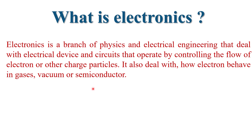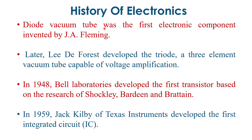Electronics has different branches including digital electronics, analog electronics, microelectronics, nanoelectronics, optoelectronics, and IC or semiconductor devices. These are the different branches of electronics. Now let's look at the history of electronics.